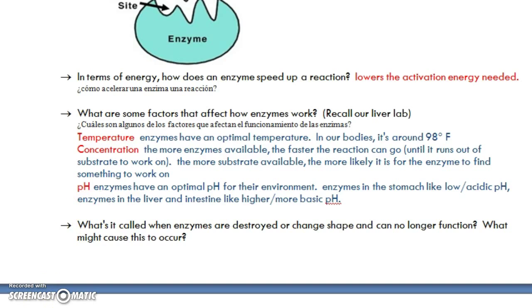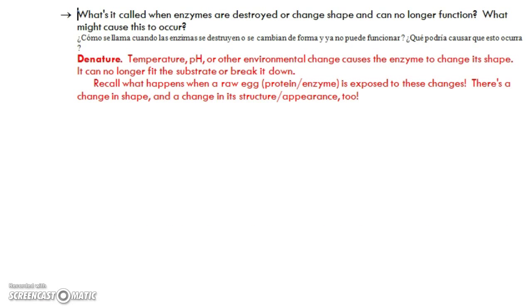So when enzymes are destroyed, it's called to denature or denaturing the enzyme. D means opposite. Nature is referring to living things. So to denature something is to basically destroy and kill it. So if an enzyme gets outside of its optimal temperature or optimal pH, it's going to change its shape. And it can no longer fit the substrate, can't break it down, it can't do its job. So that enzyme is pretty much useless.